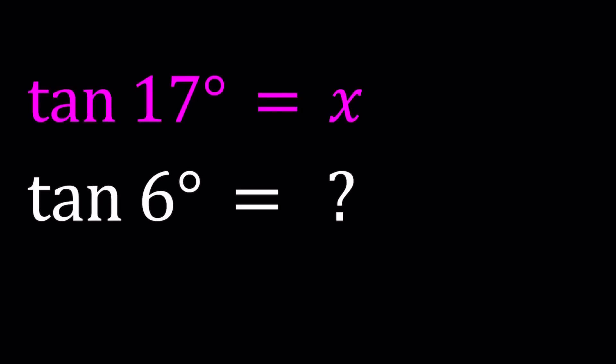Hello everyone. In this video, we're going to be dealing with trigonometric expressions. This is the type of problem that we haven't done for a while. I just wanted to revisit because these problems are fun. So we have tangent 17 degrees equals x, and we're supposed to find or evaluate tangent 6 degrees in terms of x. Even though it's not explicitly stated, that's what the problem is asking for.